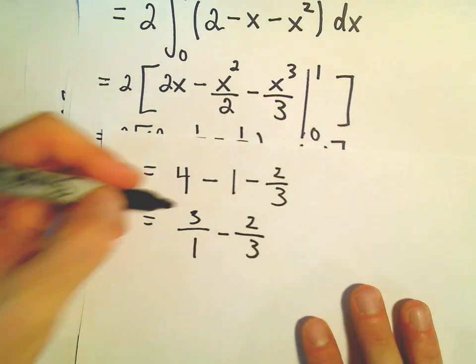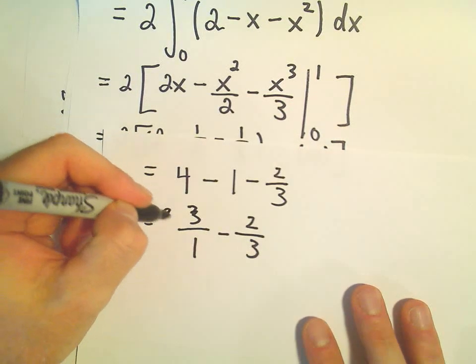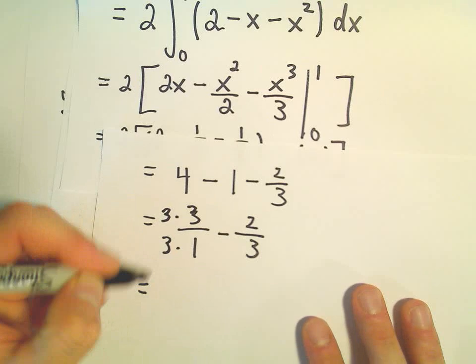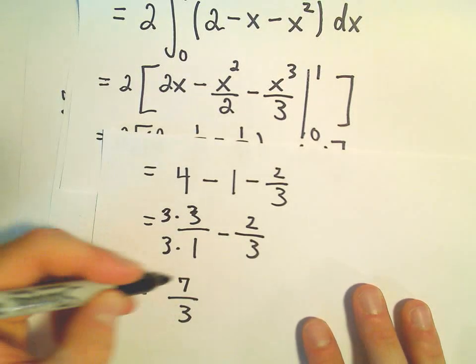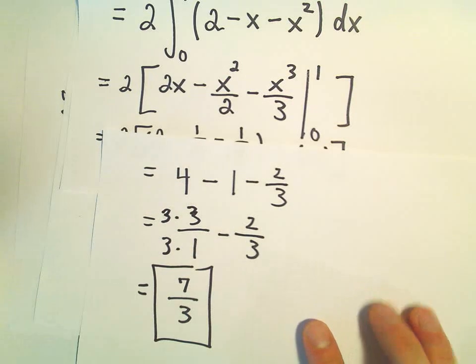Well, we could multiply top and bottom of our first one here by 3. And that would give us 9 over 3 minus 2 over 3 or 7 over 3 as the value for the area.